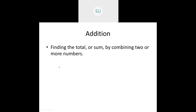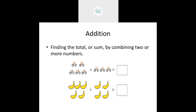We saw that addition is nothing but finding the total or sum by combining two or more numbers. For example, here we had bicycles — 5 and 3, so 5 plus 3 is 8, and we found the total number of bicycles. Same way, we found the total number of bananas: 5 plus 4 is 9.